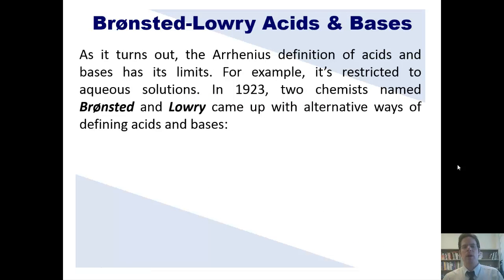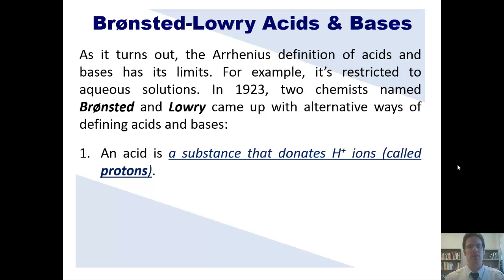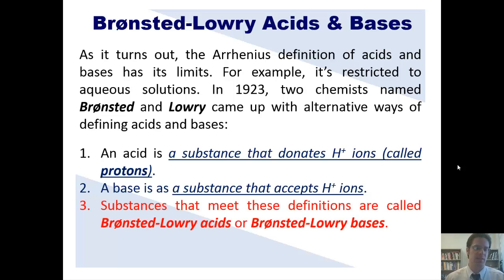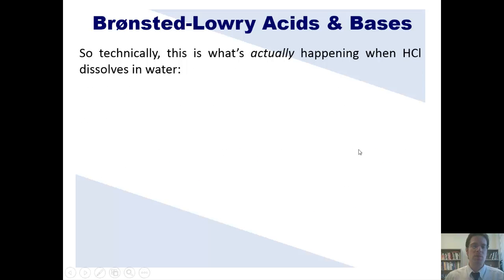The Arrhenius definition of acids and bases has its limits — for example, it's restricted to aqueous solutions. In 1923, two chemists named Brønsted and Lowry came up with alternative ways of defining acids and bases. According to their definition, an acid is a substance that donates H+ ions, called protons — that sounds similar to the Arrhenius definition. But check this out: according to Brønsted-Lowry, a base is a substance that ACCEPTS H+ ions. Substances that meet these definitions are called Brønsted-Lowry acids or Brønsted-Lowry bases, respectively. So technically, what I showed you before where HCl dissociates to just H+ and Cl− — that's actually kind of a lie.